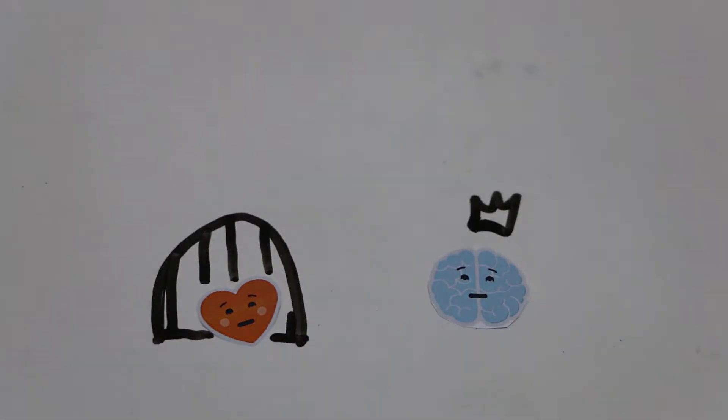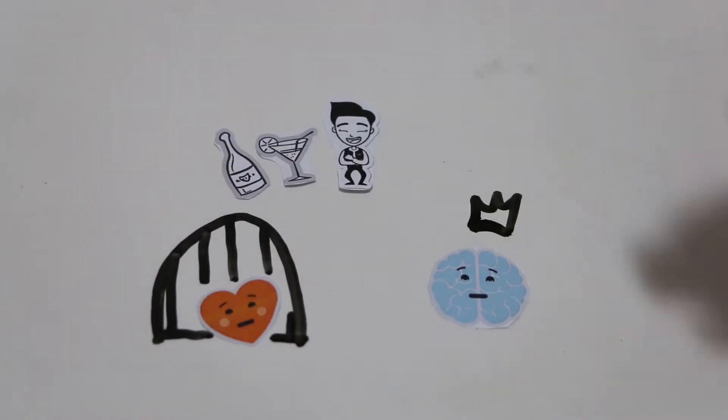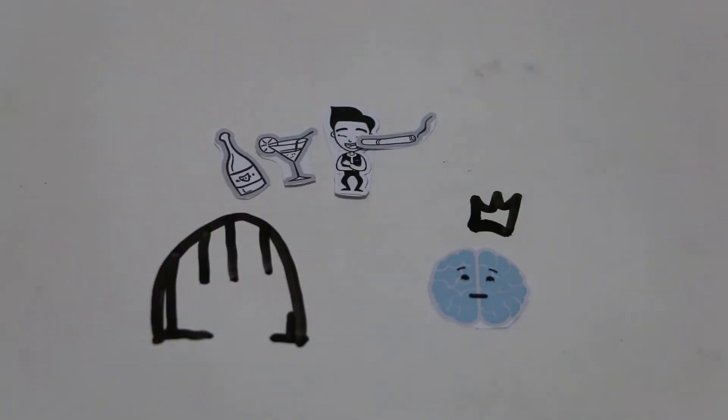The head took over his life, while the emotion locked herself deep inside. Thomas drinks, smokes, tries to find ways to set his emotion free. When he gets drunk and high, his emotion unlocks.